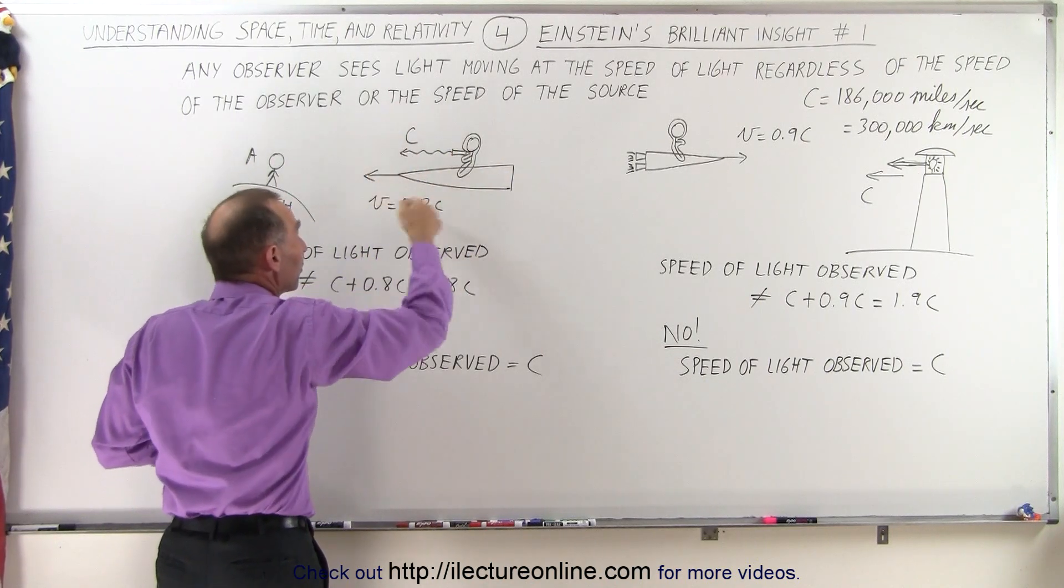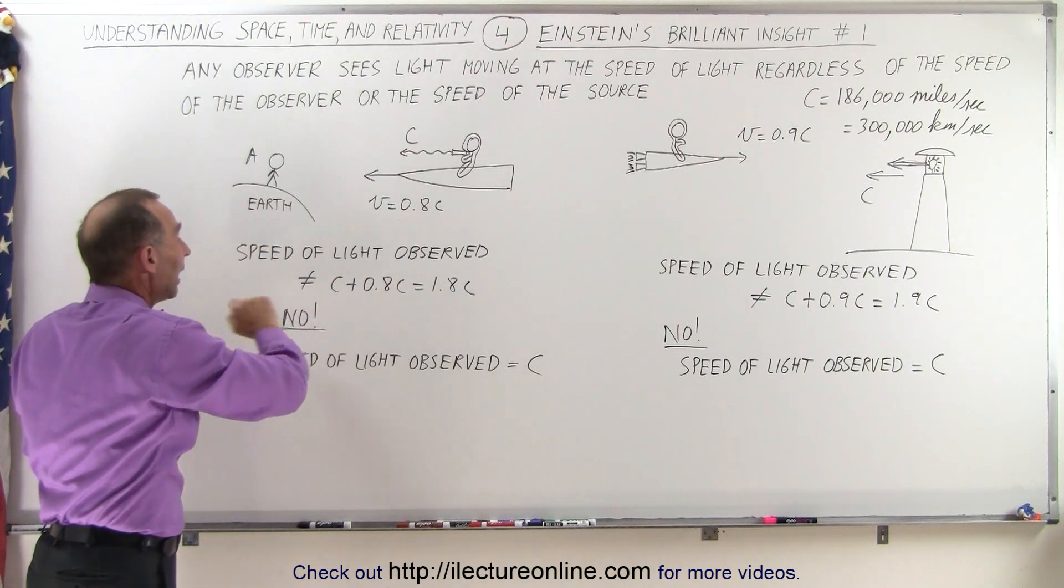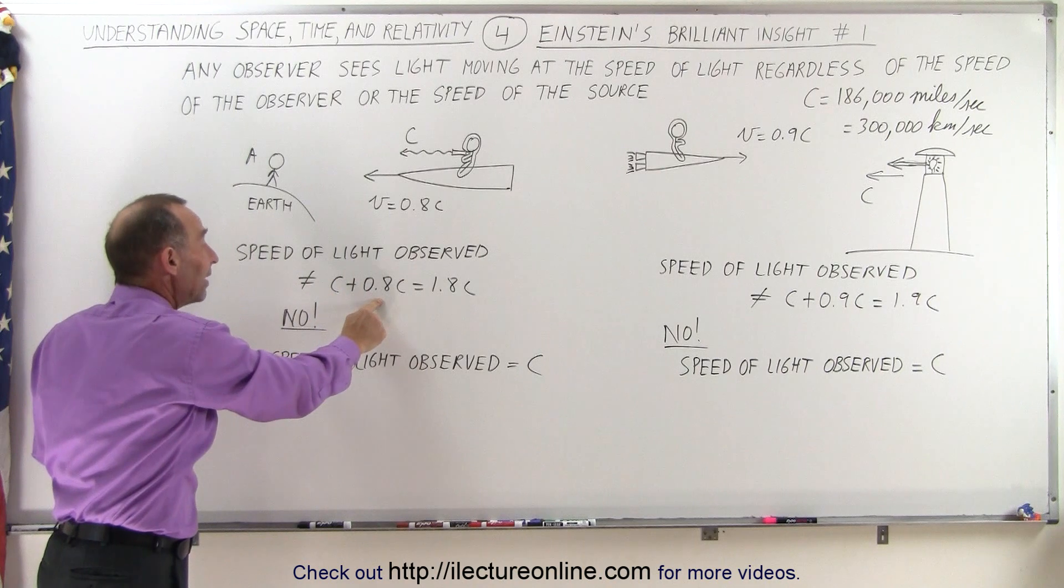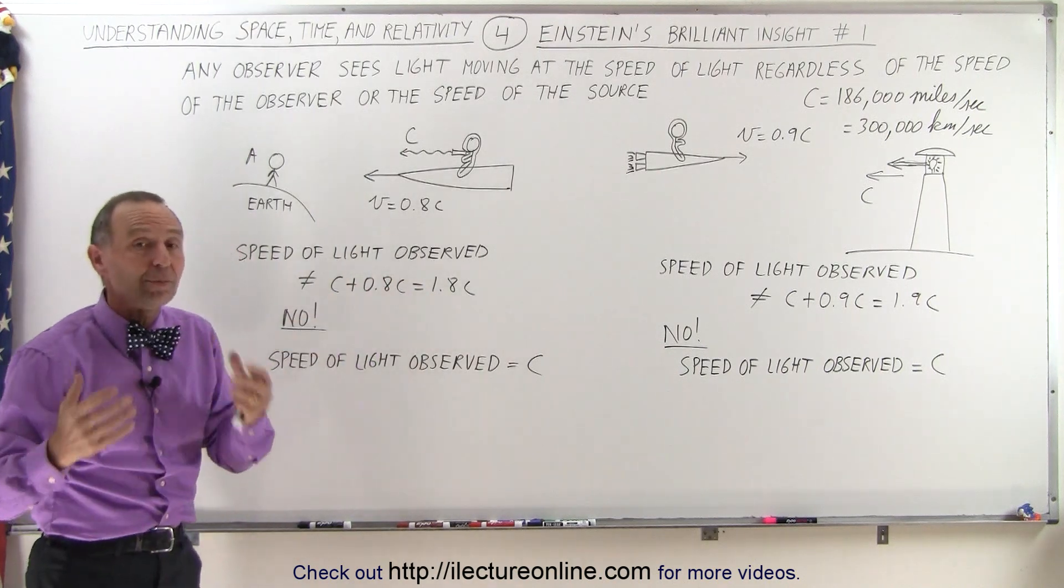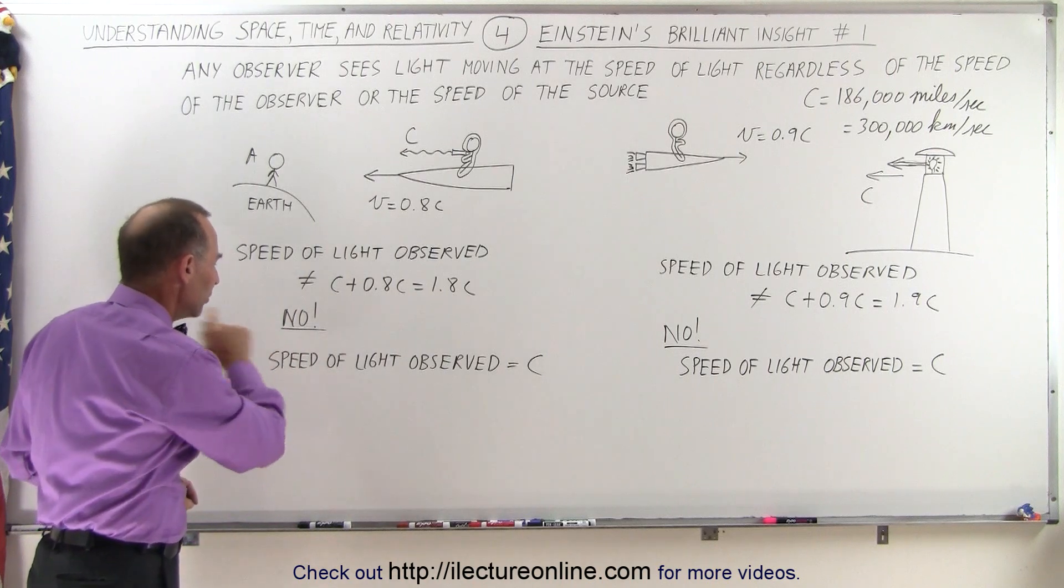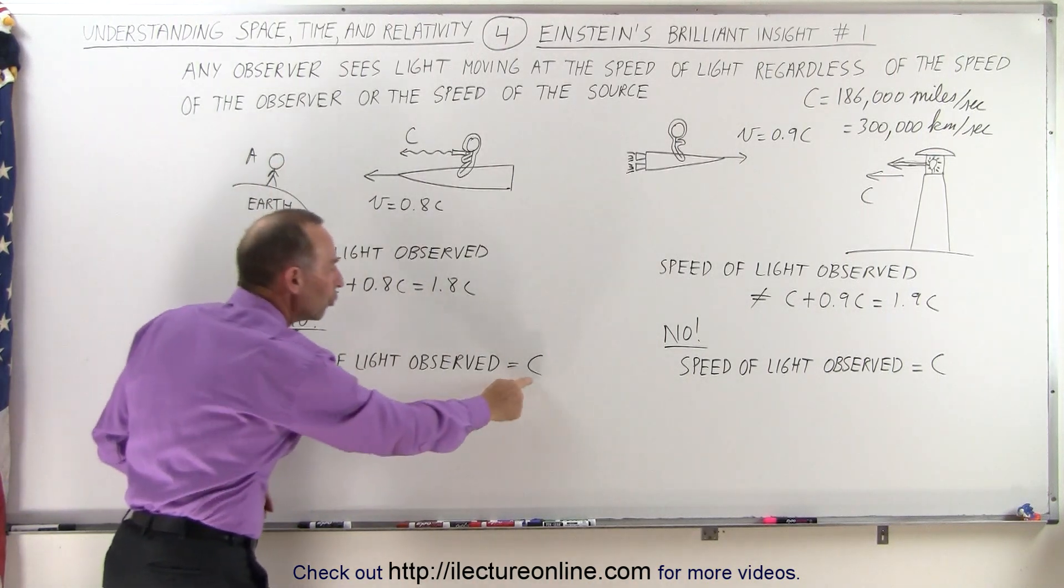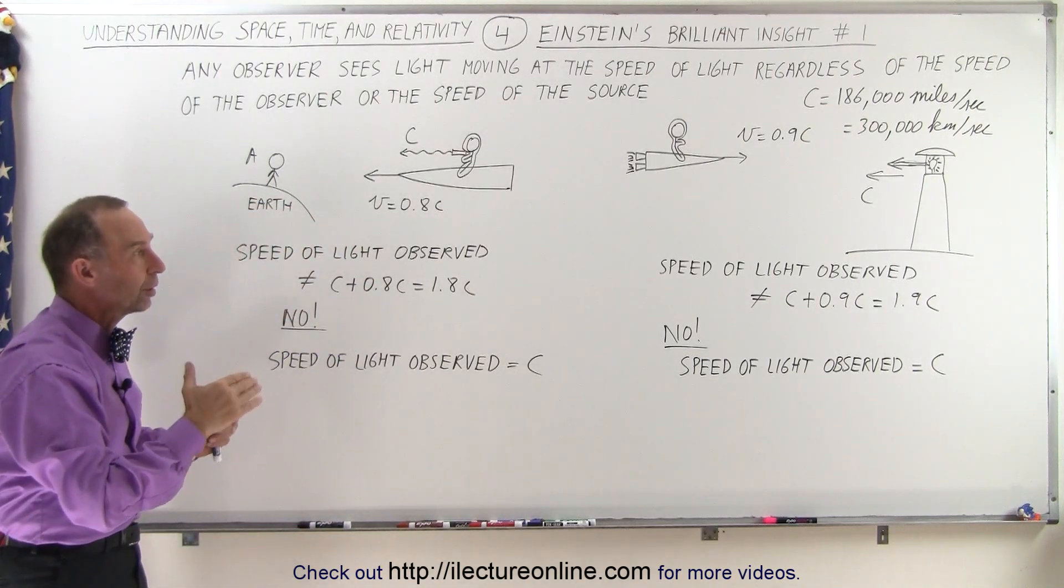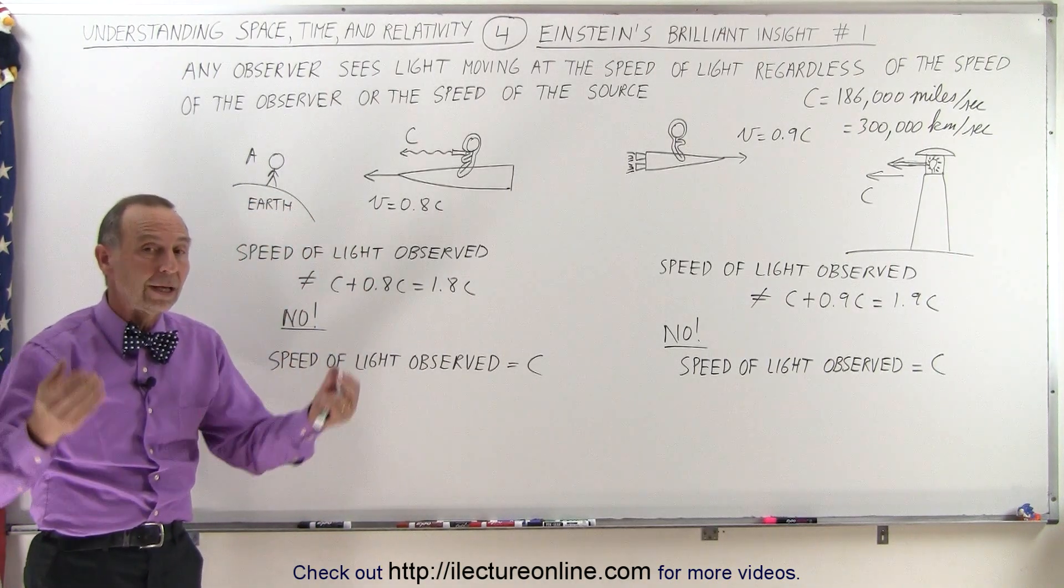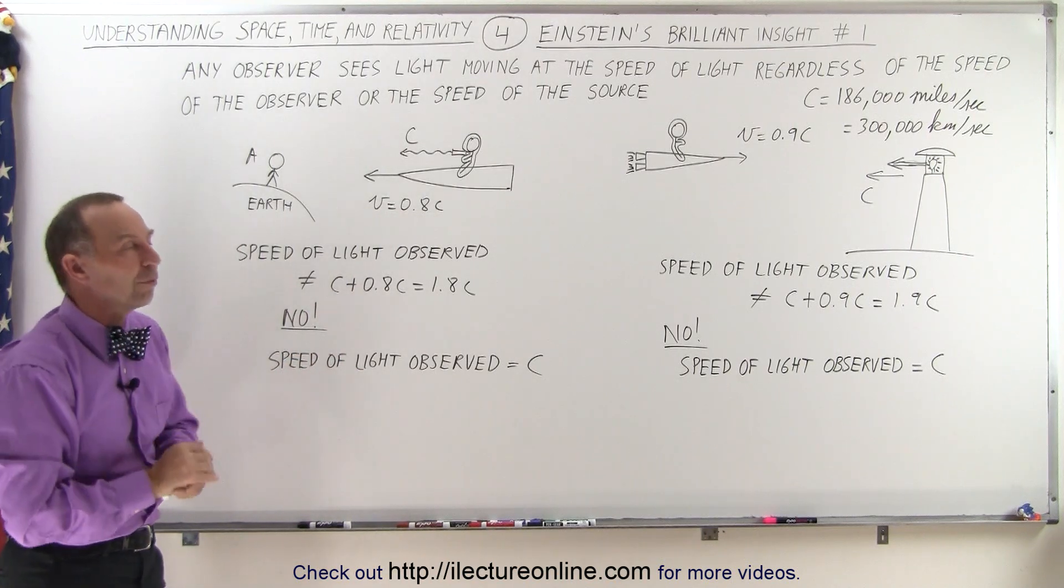So again, the classical thinking would say that the light is approaching observer A on the Earth at a speed of C plus 0.8C, or 1.8 times the speed of light. But again, Einstein said that's not going to happen, no, the speed of light as seen by this observer is going to also equal C, regardless of what the source is doing, regardless of what the observer is doing. The speed of light will always look like the speed of light, regardless of what they're doing.